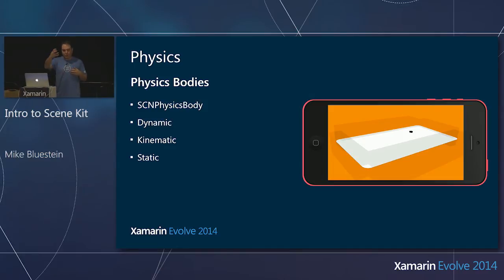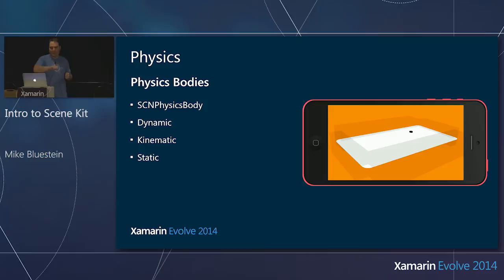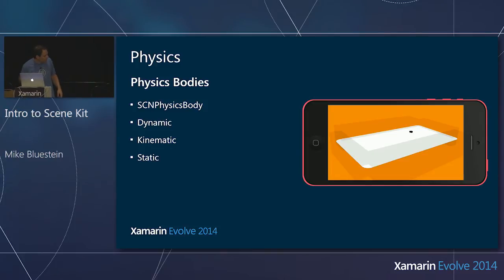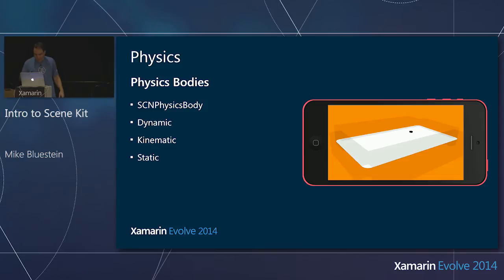A dynamic physics body has force applied to it, it moves and animates, and supports collision. A kinematic body — you can move it through animations, but it wouldn't move based on applied force. Think of a spinning box with things falling off it. Then there's a static body, like the boards in my little hockey example — just these planes representing ice surface and cylinder representing a puck.